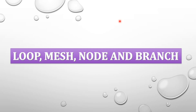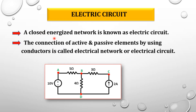Hi everyone, today we will see the concepts of loop, mesh, node, and branch in circuit terminology. First, what is an electric circuit? A closed energized network is known as an electric circuit, or the connection of active and passive elements using conductors is called an electrical network or electrical circuit. Active elements are energy-delivering devices, for example battery, DC generators, AC generators.